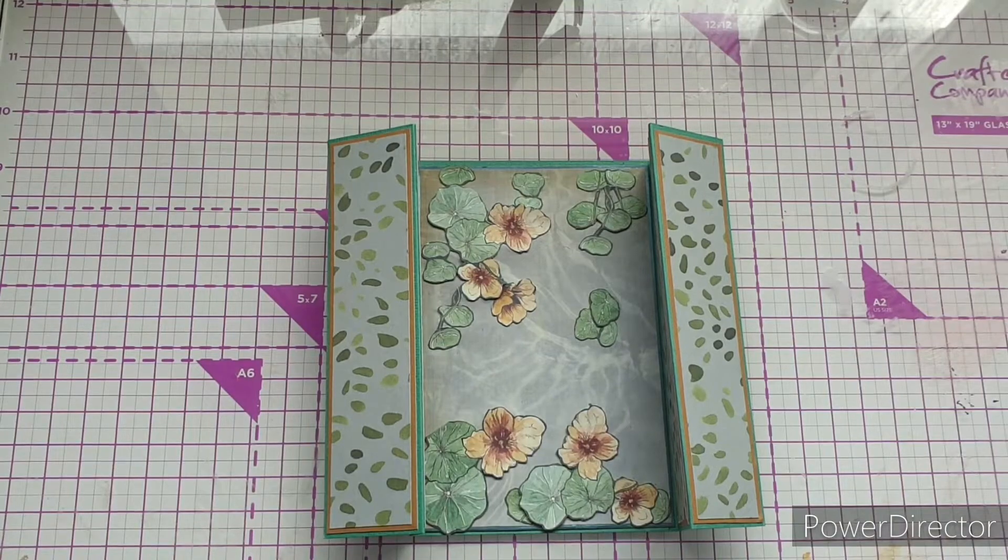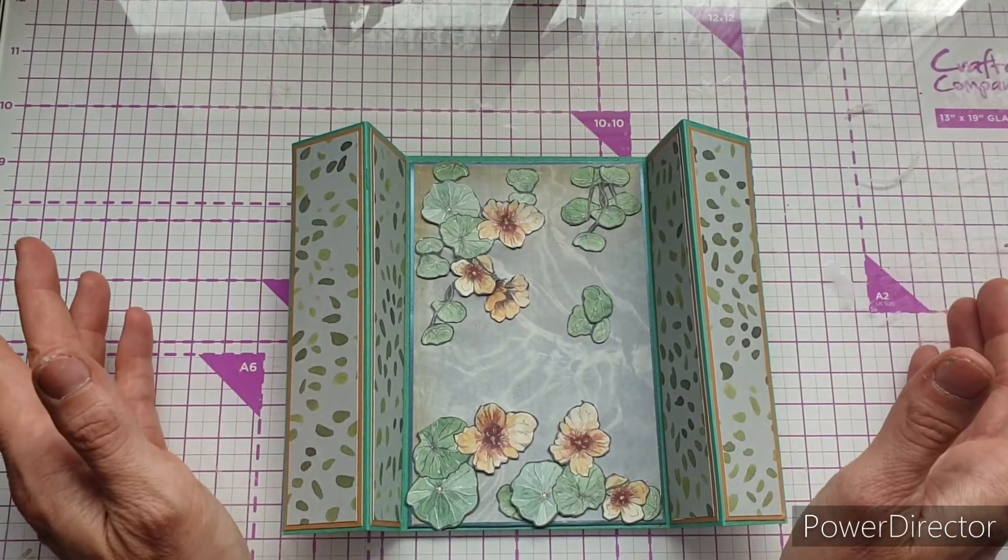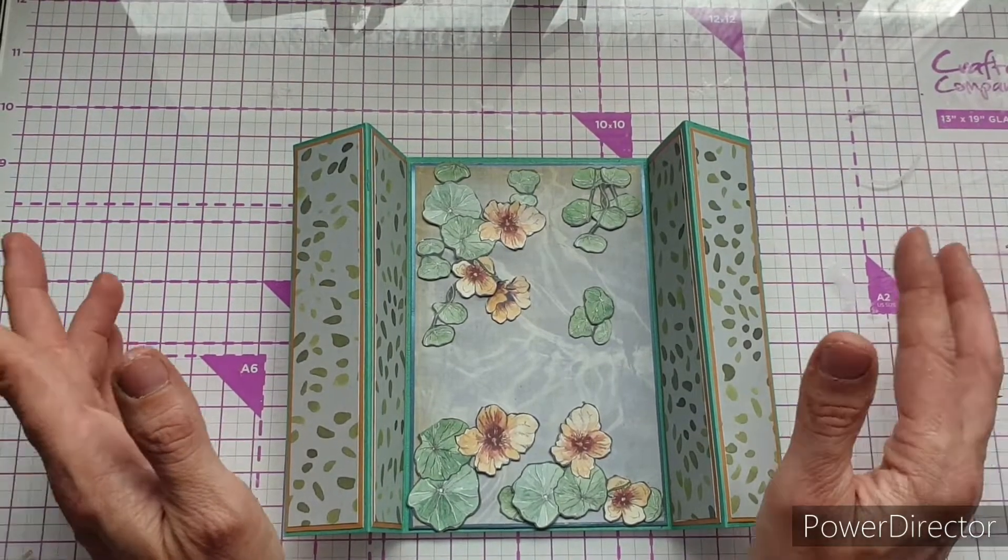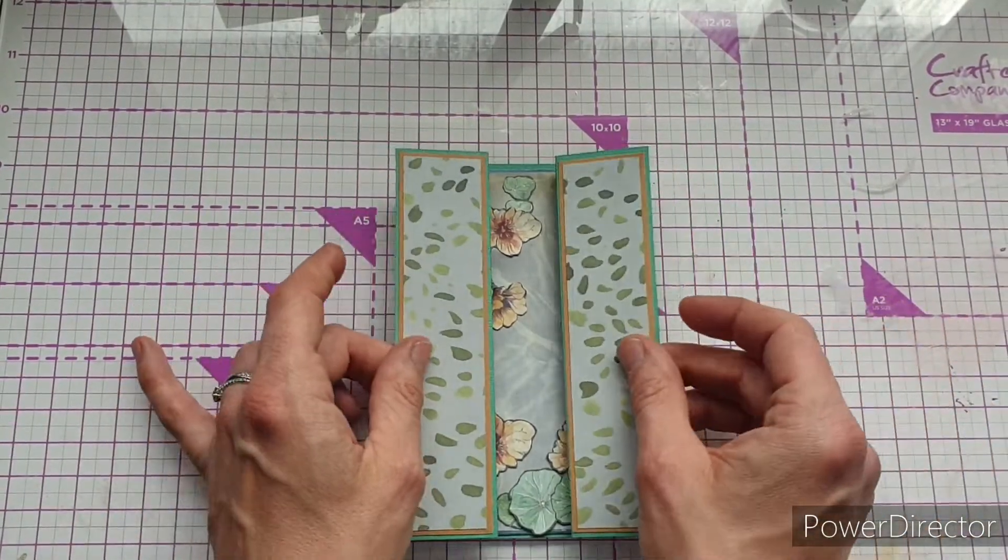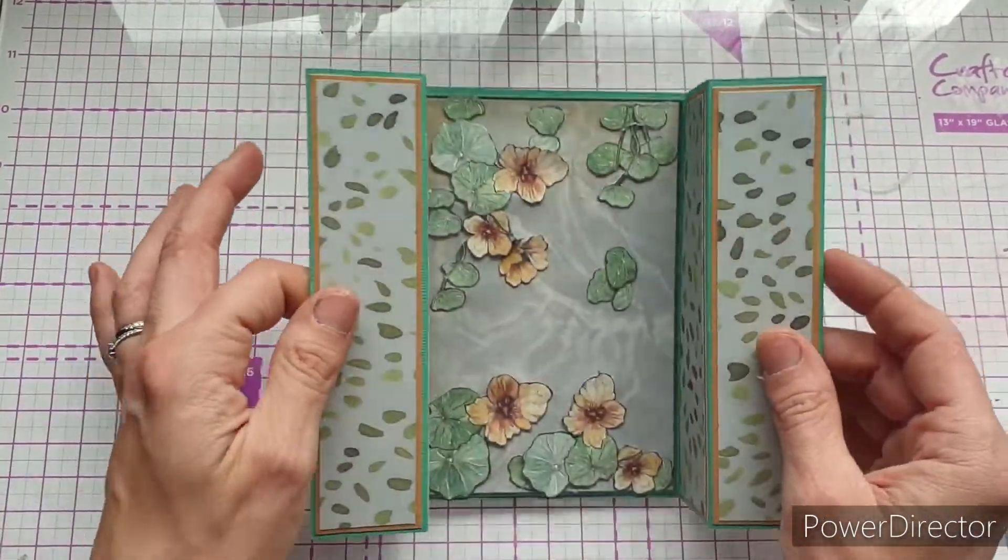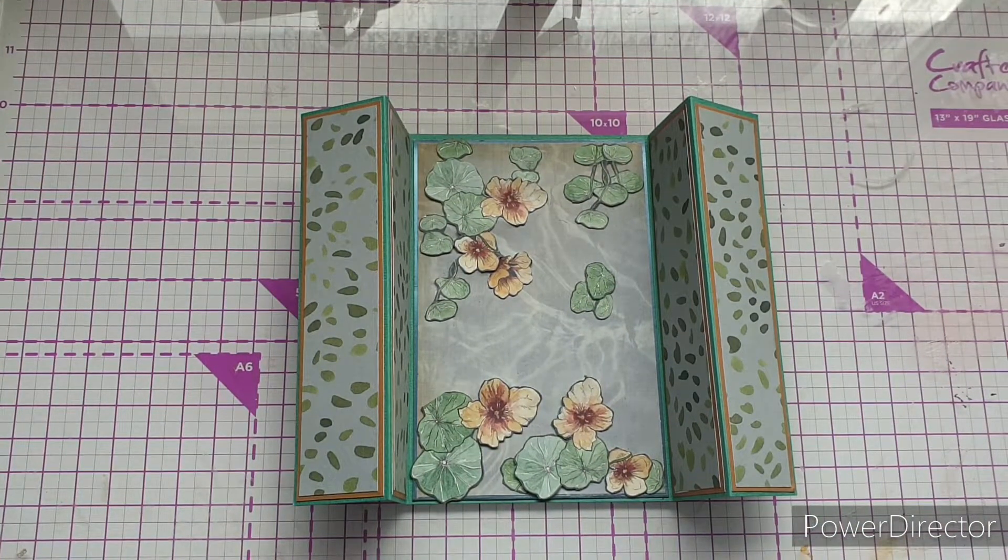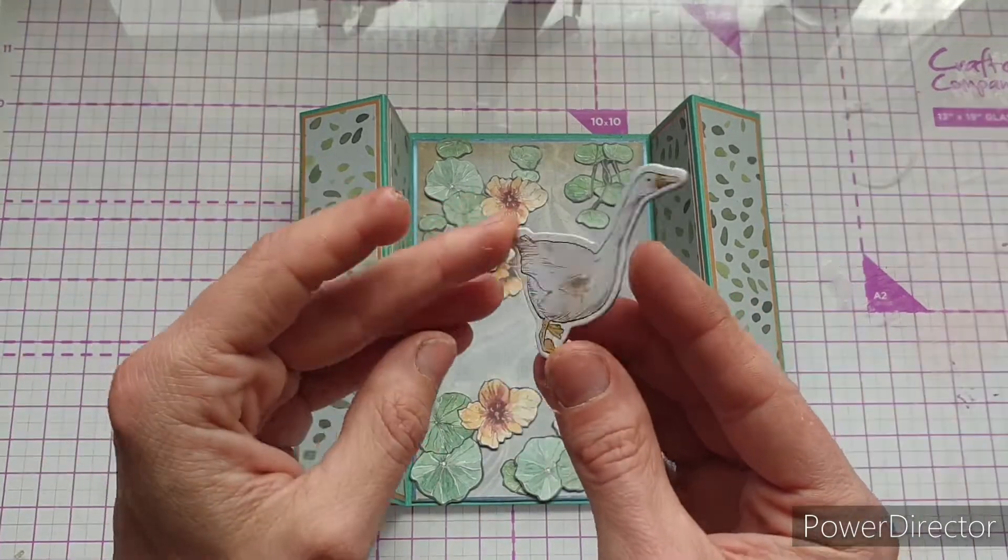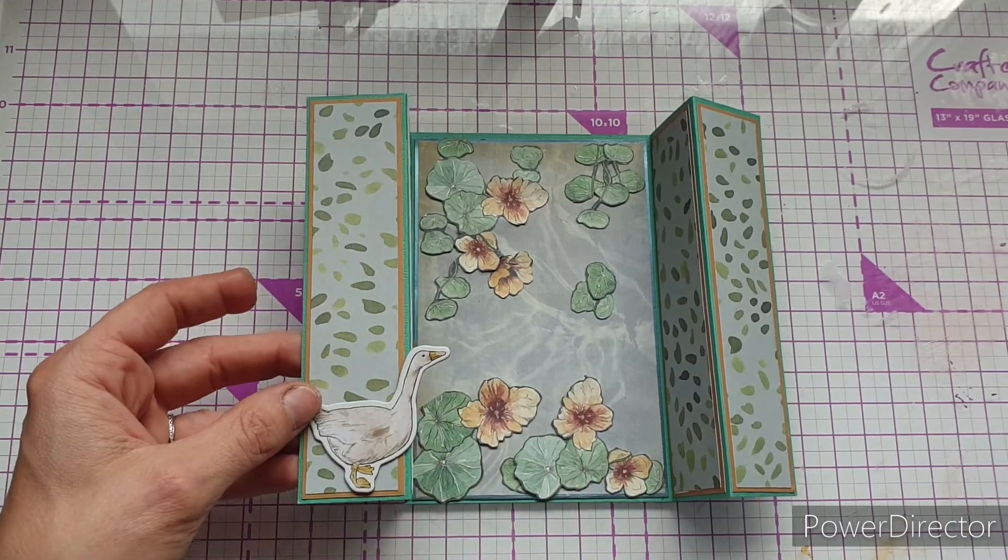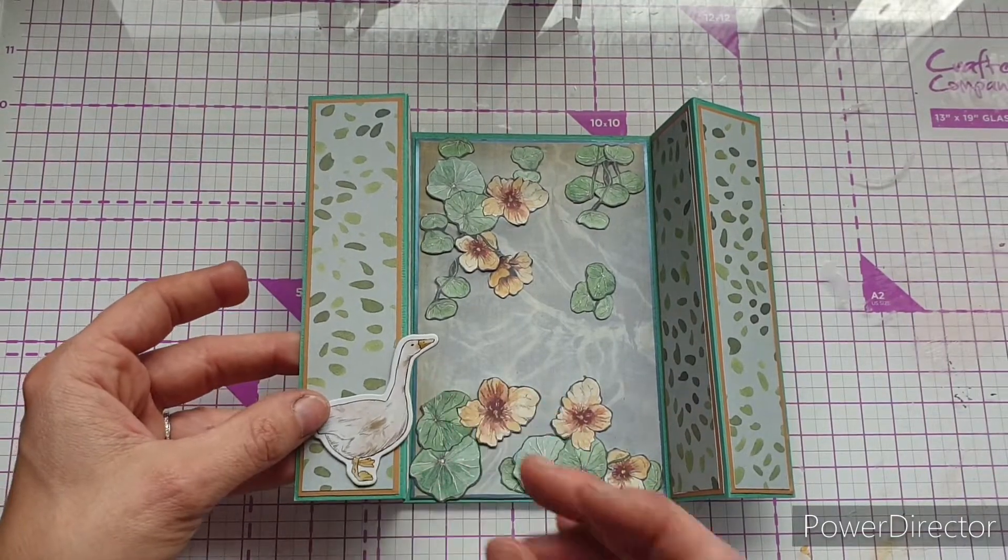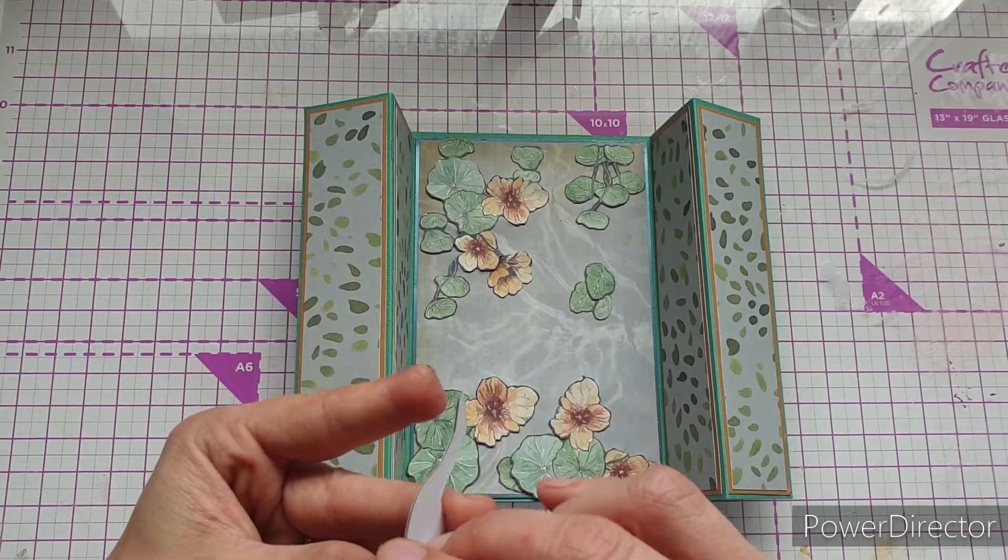So as you can see, our lily pond has taken shape. I think it looks really pretty, so all that's left is to attach a sentiment and maybe a little bit of decoration to the front here. You could leave it like that, but I actually think I'd quite like to add something else. What I have are the chipboard shapes from the collection, and I really like this little goose. I think he's really cute and I kind of see him going here as if he's going to jump in the pond and either take a fish or have a swim.